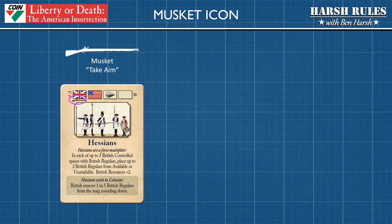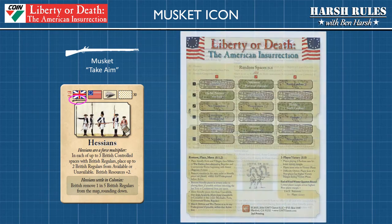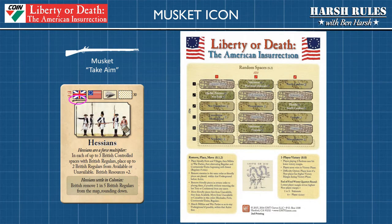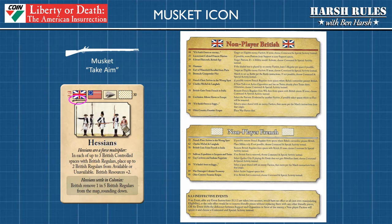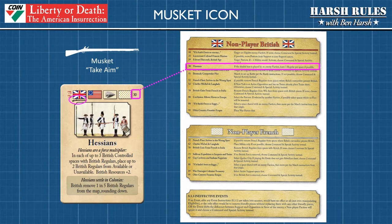The next icon you may encounter on event cards is the musket. The musket icon indicates that a faction can execute an event but it requires carefully following additional rules. To remember what this icon is for, I always think of soldiers taking aim — an act that with a musket requires a lot of focus and concentration, just like these rules. In the Liberty or Death game box there will be a foldout with random space information. Inside is a list of instructions organized by faction and card number for completing each of these musket events. Keep these two icons in mind as you work through the event cards.